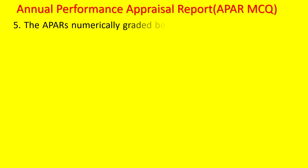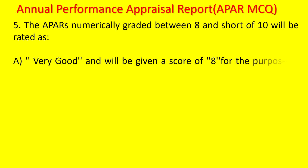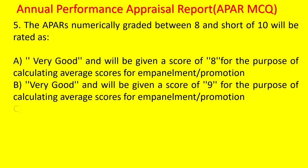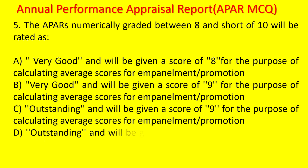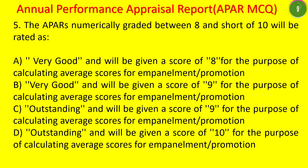MCQ: APARs numerically graded between 8 and short of 10 will be rated as — very good with score 8, very good with score 9, outstanding with score 9, or outstanding with score 10? The answer is 'very good and will be given a score of 9.' Anything from 8 up to 10 (including 10) gets an average score of 9.